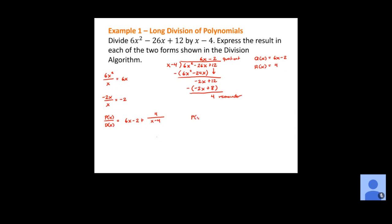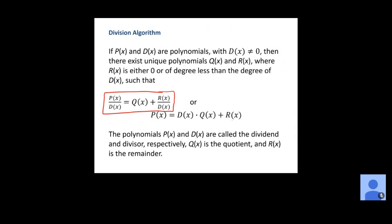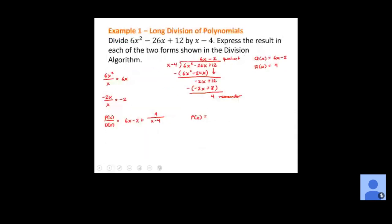Sometimes in WebAssign, it will ask for the other form: P of X equals D of X times Q of X plus R of X. So that would be (x minus 4) times (6x minus 2) plus 4. Those are the two different forms. Sometimes they'll just give you a box for the quotient and remainder separately, and you type those in.